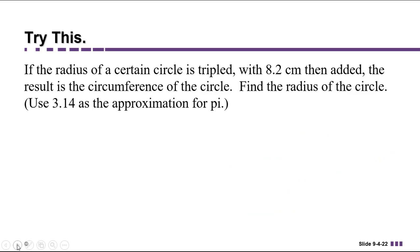Now here's a brain teaser. If you can do this, you can do all of the problems in the homework. Pause the video and see if you can figure it out. It says if the radius of a certain circle is tripled with 8.2 centimeters then added, the result is the circumference of the circle. Find the radius of the circle and use 3.14 as the approximation for pi.